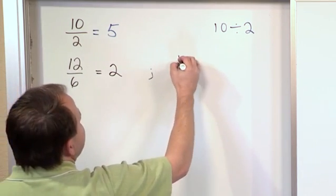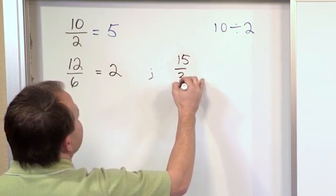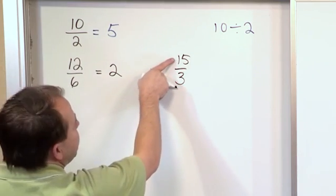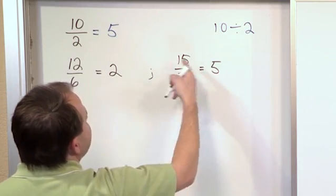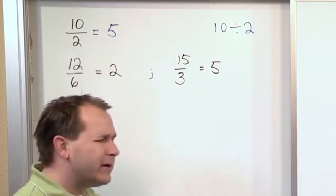Of course you could do another one, you could say 15 thirds. Well, of course this looks like 15 divided by 3 and it divides evenly and you get 5 because 3 times 5 gives you 15. So you see what I'm saying,